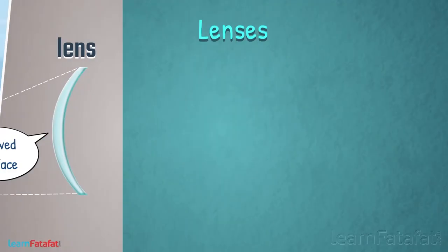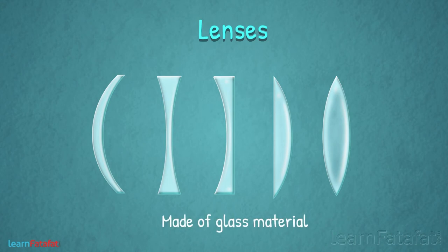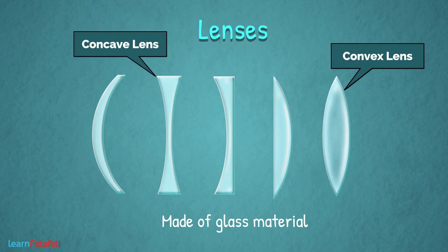Lenses के काफी सारे अलग-अलग types हैं. Usually, ये glass material से बने होते हैं. इस video में हम जानेंगे convex and concave lenses के बारे में. So, what are convex lenses?